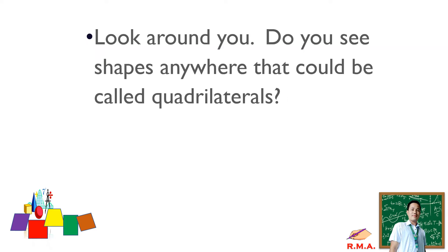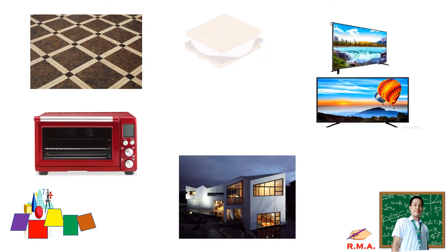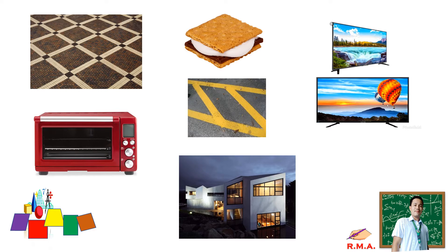Look around you. Do you see shapes anywhere that could be called quadrilaterals? Here are some examples: we have a TV, a cookie, tile, oven, pedestrian lane, a mark, the corner side, and we can consider it as a plane figure of a house.